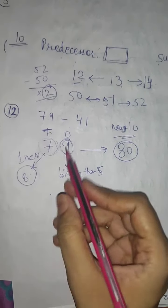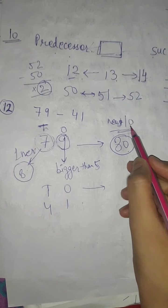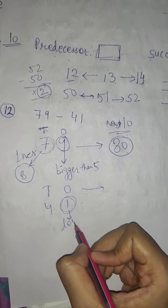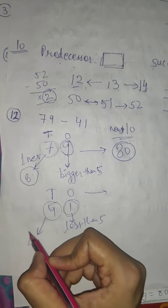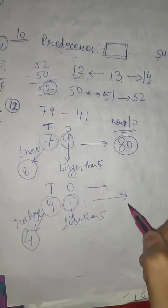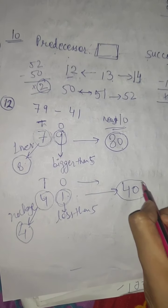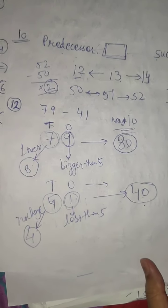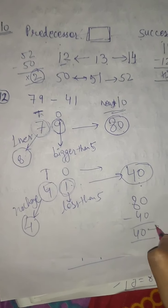Similarly, rounding off 41 to the nearest ten: the ones digit is 1, which is less than 5, so the tens digit stays the same — no change. So 41 rounds off to 40. Now the estimated difference is 80 minus 40, which is 40. So the correct answer is 40.